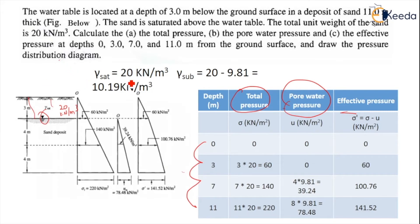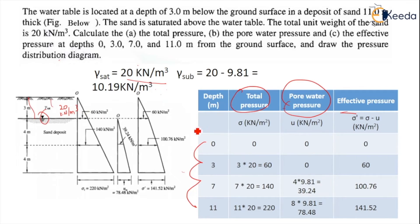Gamma sat is given as 20 kN per meter cube. Gamma sub (submerged unit weight) = gamma sat minus gamma w = 20 minus 9.81 = 10.19 kN per meter cube. At depth 0, all three pressures — total stress, pore water pressure, and effective stress — are zero.